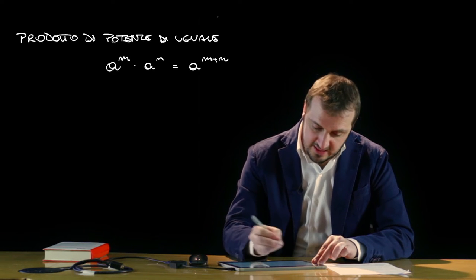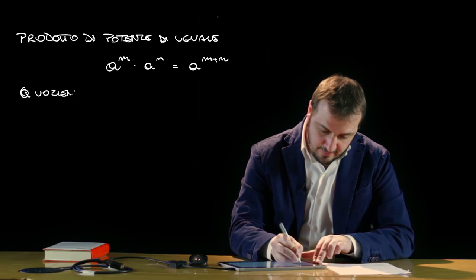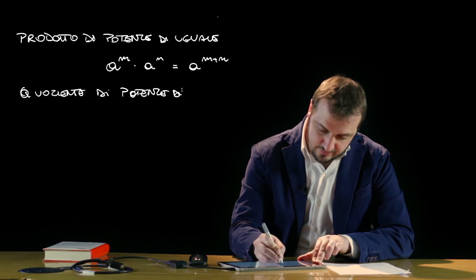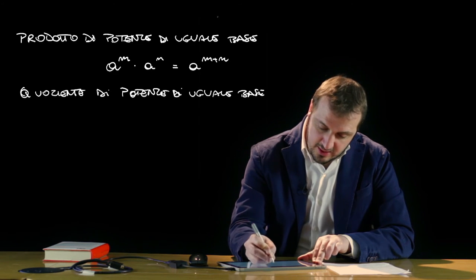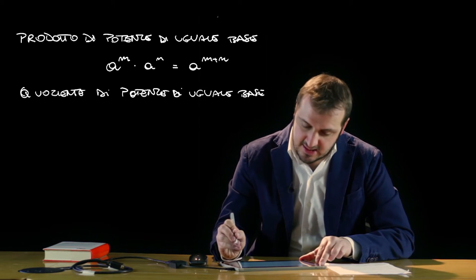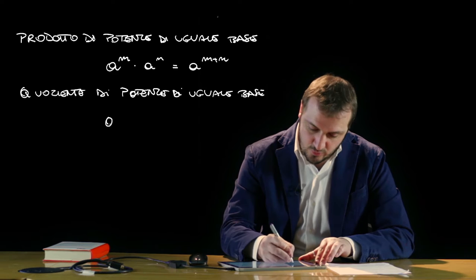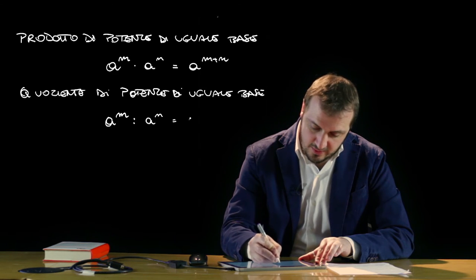Per quanto riguarda invece il quoziente di potenze di uguale base, in analogia con quanto visto per il prodotto, il quoziente di due potenze caratterizzate dalla stessa base è una potenza che ha per base la stessa base e per esponente la differenza degli esponenti, e quindi a alla m meno n.